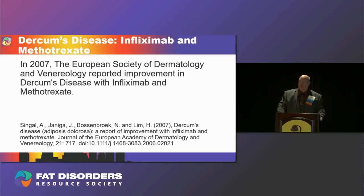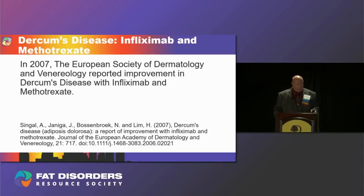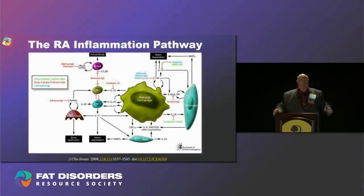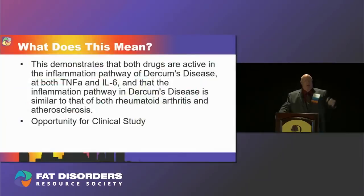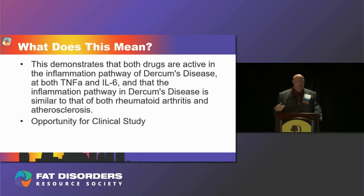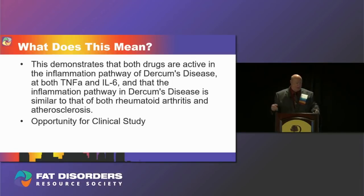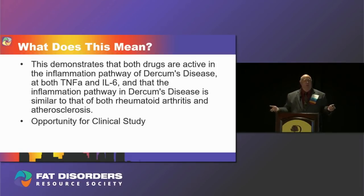When it became necessary to discontinue both drugs, the pain associated with the Dercum's disease returned. This demonstrates that both drugs are active in the inflammation pathway of Dercum's disease — both at IL-6 and at TNF — and that the inflammation pathway in Dercum's disease is similar to those of rheumatoid arthritis and atherosclerosis. This represents an opportunity for a clinical study using infliximab or methotrexate, either alone or in combination versus placebo.